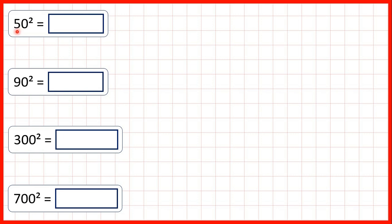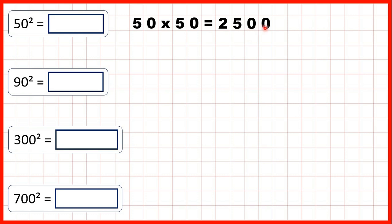Now we need to work out 50 squared. Remember, this little 2 — this squared symbol — means multiply the number by itself. So to work out 50 squared, we need to work out 50 times 50. That's 2,500, because 5 times 5 is 25, and then if we have two end zeros in a multiplication question, we need two end zeros in our answer. So 50 squared is 2,500.